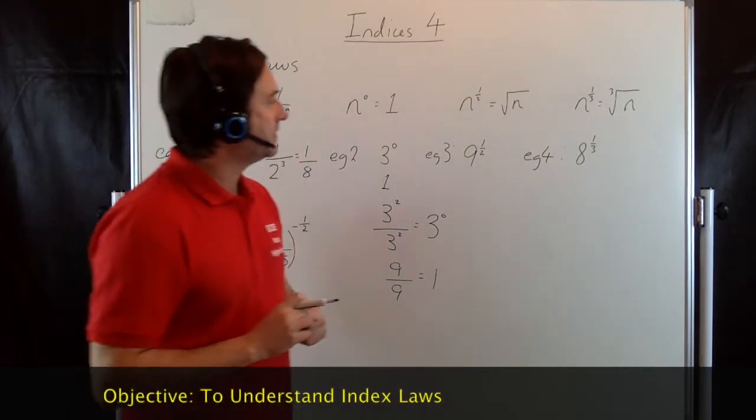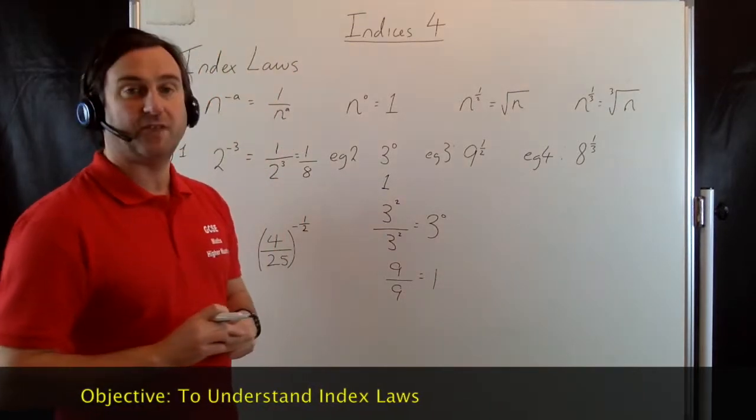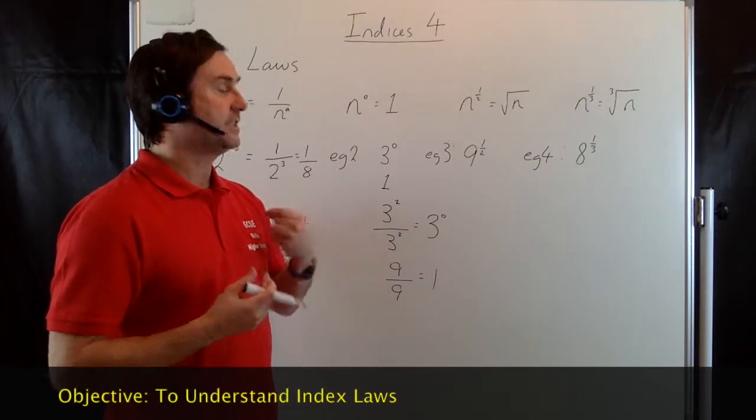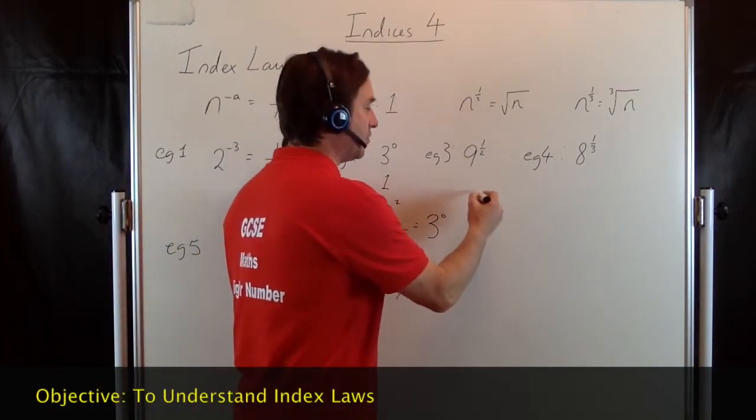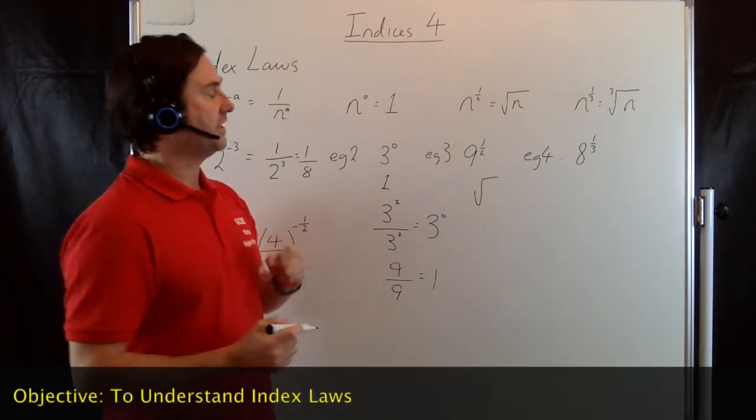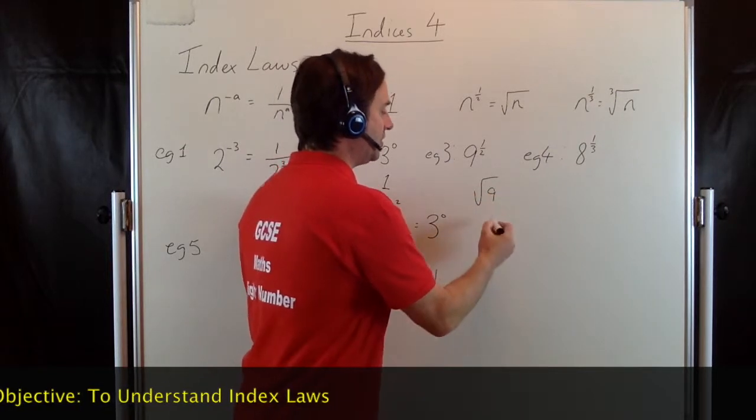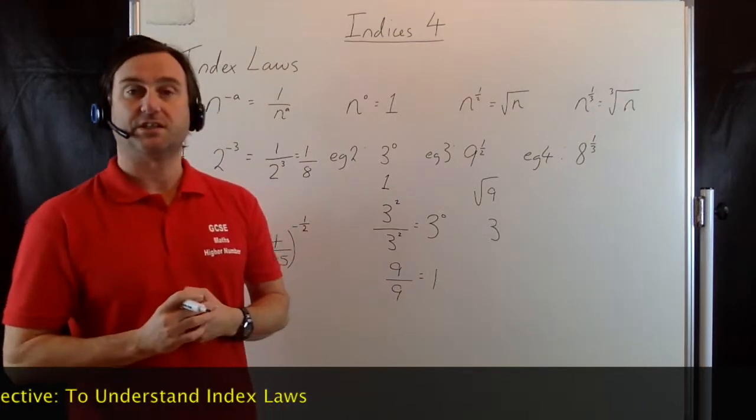Next rule here, example 3: we've got n to the half equals the square root of n. So whenever you see a number raised to the power of a half, it's exactly the same as finding the square root of the number. So for example, 9 to the half is the same as the square root of 9, which gives us an answer of 3.